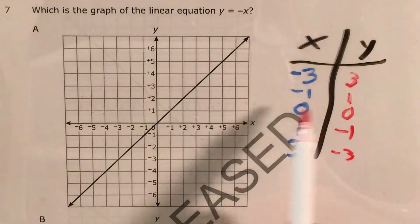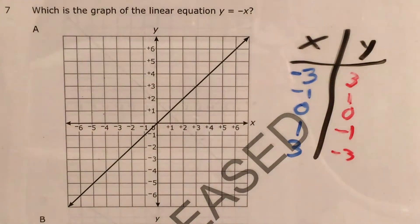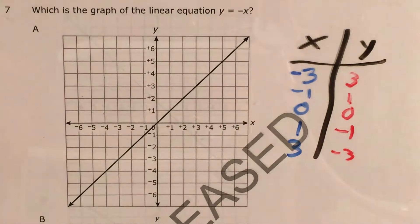So essentially, except for 0, we've got every x and y just having a different sign. If x is positive, y is negative. If x is negative, y is positive.